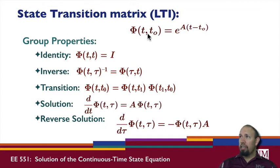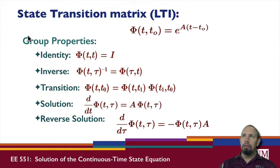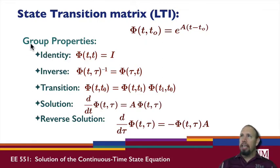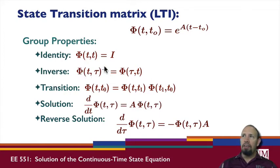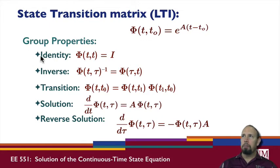The state transition matrix in continuous time actually satisfies the properties of what's called a group. In discrete time, they formed a semi-group — those are math terms. In discrete time it didn't necessarily give you a group because in general we couldn't guarantee the inverse. In order to have a group, a collection of math objects needs to have an inverse. In this case the state transition matrix does have an inverse, so we actually get a full group, not just a semi-group.